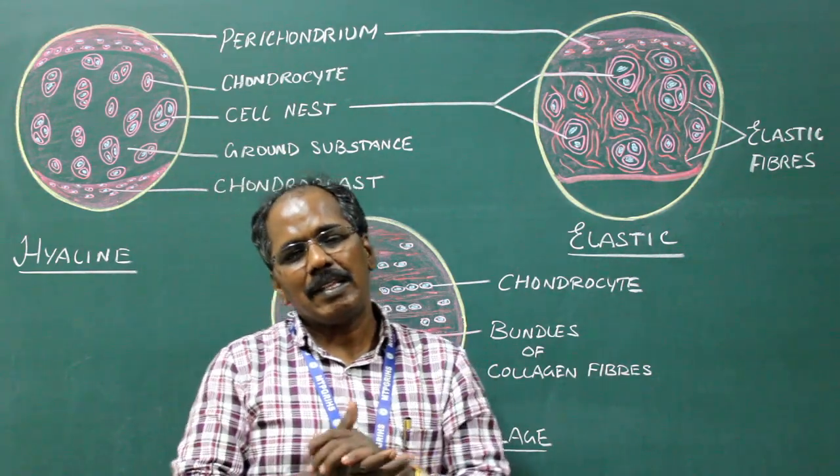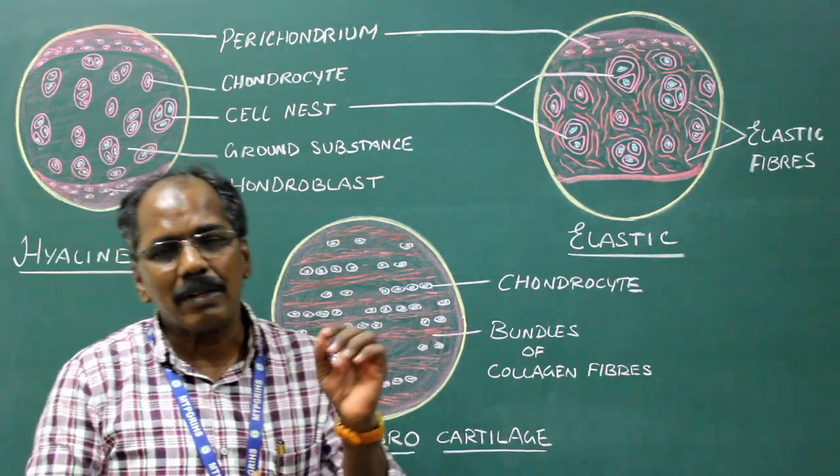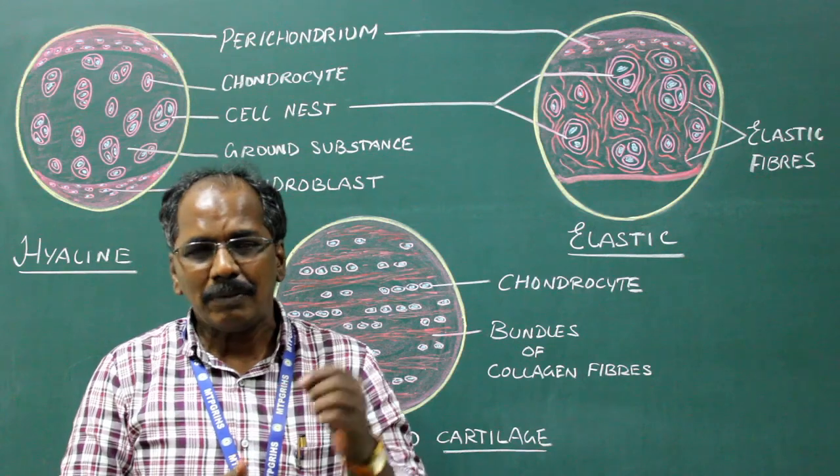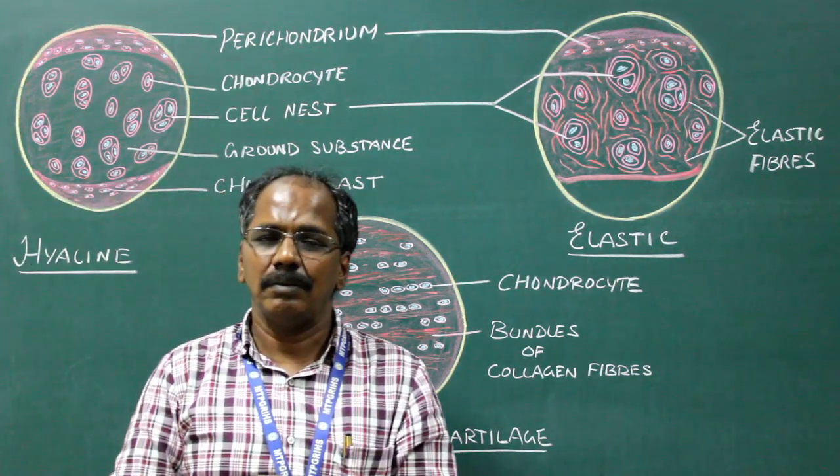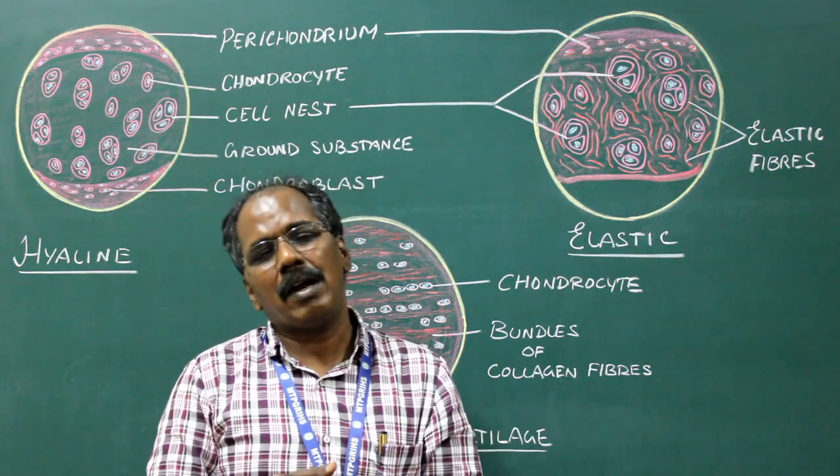Examples of white fibrocartilage: intervertebral disc, pubic symphysis, glenoidal labrum, acetabular labrum.